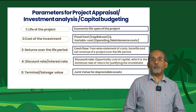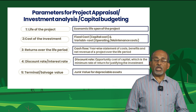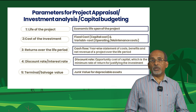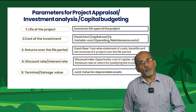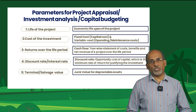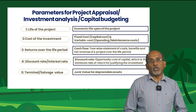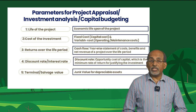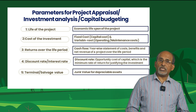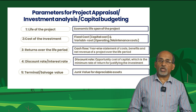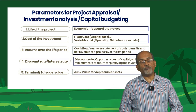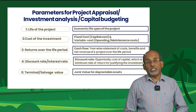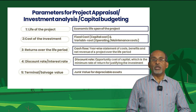Gross returns are given by the cash flow statement. It is the year-wise statement of costs, benefits, and net revenue of a project over the life period. There will be differences in the timing of expenses and the associated returns. The fifth parameter is salvage value or junk value. It is the worth of a depreciable asset at the end of its useful life. A depreciable asset is used for generating income and has a useful life of more than a year and gradually reduces in value over time.